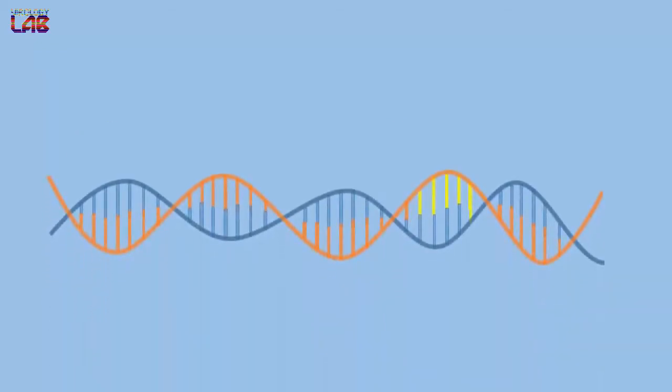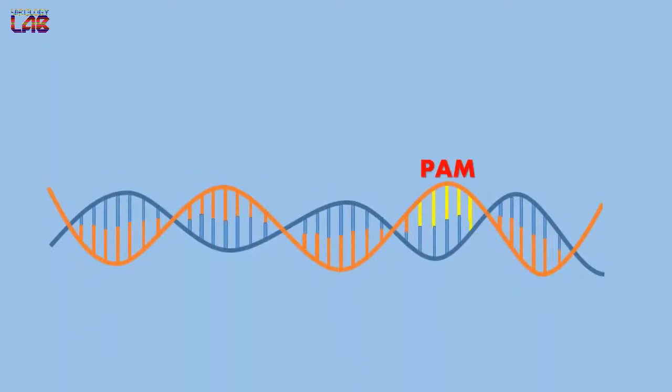There is a question: how do bacterial cells identify viral DNA as non-self or foreign material? The answer is viral DNA contains a specialized sequence structure called PAM, which can be recognized as foreign DNA by the CRISPR-Cas9 system.